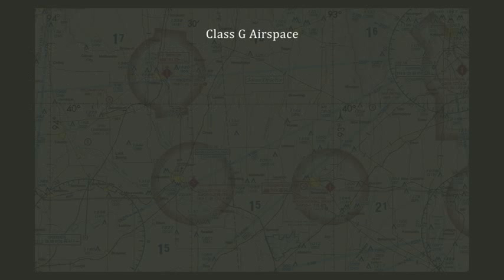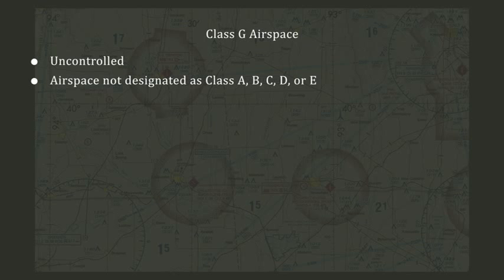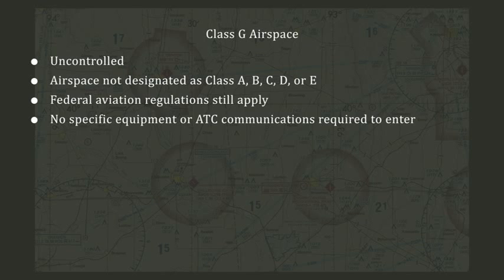Class G airspace is uncontrolled airspace. It is all airspace that is not designated as Class A, B, C, D, or E. Although Class G airspace is uncontrolled, Federal Aviation Regulations still apply. Similar to Class E, there are no specific airplane equipment requirements to operate in Class G airspace, and pilots are not required to establish communications with any air traffic control facilities.